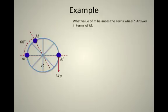Suppose I have a Ferris wheel and it has three masses on it. Two of them have mass capital M and the third has mass little m. I want to know which value of mass little m balances the Ferris wheel out.